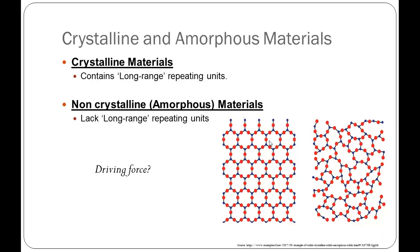In the liquid or gaseous form the atoms or molecules are separated from each other and are not tightly packed. However, in the solid the atoms arrange themselves and pack together very tightly. Crystalline solids or crystal materials are those materials in which the atoms have arranged themselves in a particular order throughout the whole structure.